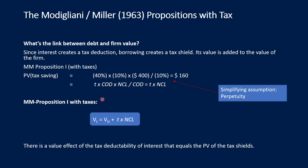Modigliani-Miller Proposition One with taxes must therefore be adjusted: there is now a leverage effect. The value of the levered firm equals the value of the unlevered firm plus the present value of the tax shields. So V_L = V_U + PV(tax shields), where PV(tax shields) = T × D.